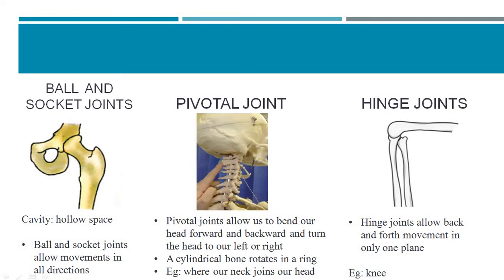The ball and socket joint is basically a joint in which a ball-like structure rotates inside the socket of another bone. In this type of joint, movement is possible in all directions — that is, a 360-degree movement — and it is present in your shoulder girdle and your hip girdle or the pelvic girdle. So the pectoral and pelvic girdles have ball and socket joints.